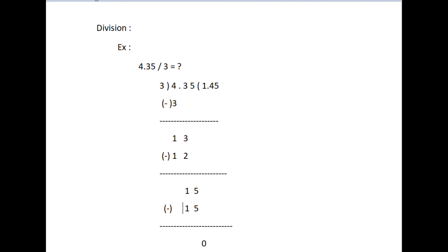Dividing by a decimal is just like dividing whole numbers, except for placing the decimal point in the dividend. Place the decimal point in the quotient directly above the decimal point, then divide as if you were dividing whole numbers. For example, divide 4.35 by 3. We get the quotient 1.45.